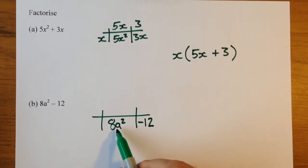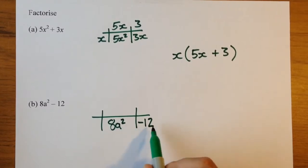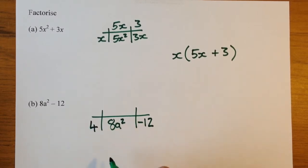Now this time there's only an a in this term, so we're looking for a times table that 8 and 12 are both in, and we're looking for the biggest times table they're both in. In this case it is the 4 times table.